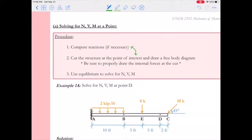Basically compute the reactions if necessary, then cut the structure at the point of interest. Be sure to consider both one and two as you're doing this because if you cut the structure, you might be able to see if the reactions are in fact necessary.